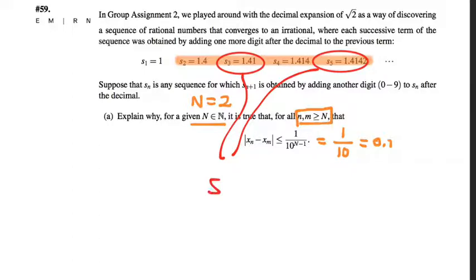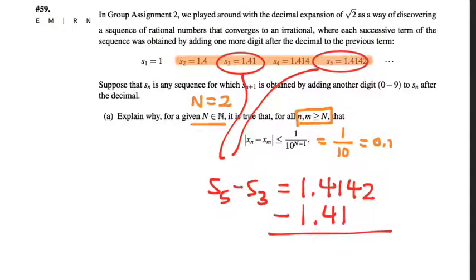Say I take s_5 minus s_3, that's 1.4142 minus 1.41. And so when I subtract these, I get something which is indeed less than 0.1.